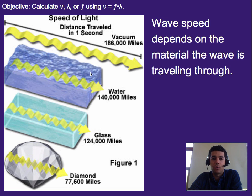Now it moves a little bit slower in water. In this case, in one second in water, it would only travel 140,000 miles. In glass, it would only travel 124,000 miles. If you had a gigantic diamond and you allowed light to travel for one second, it could only go 77,500 miles.